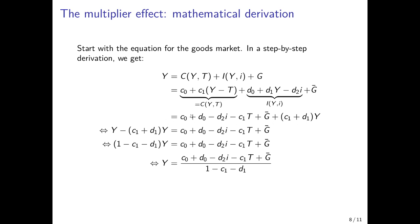When we collect terms, we subtract (C1 + D1) times Y from the left-hand side, leaving only parameters, taxes, and governmental expenditures on the right-hand side. This means 1 minus C1 minus D1 times income on the left. We then divide by this term so that income is isolated on the left-hand side, expressed as a function of the model's parameters, taxes, and governmental expenditures. We can then take the partial derivative of Y with respect to either governmental expenditures G-bar or taxes T.